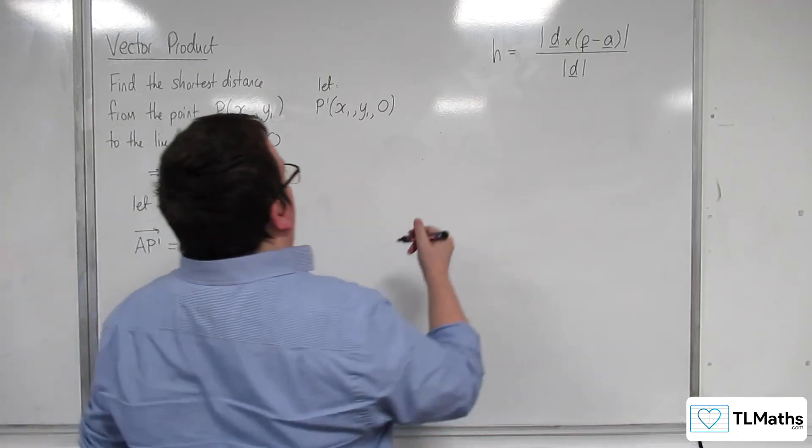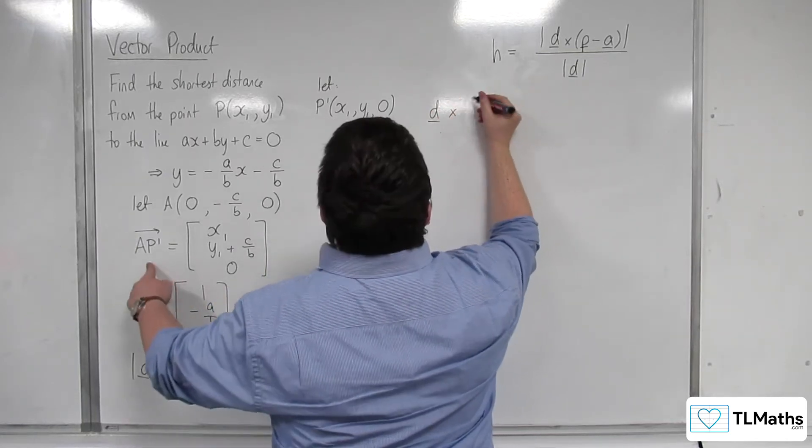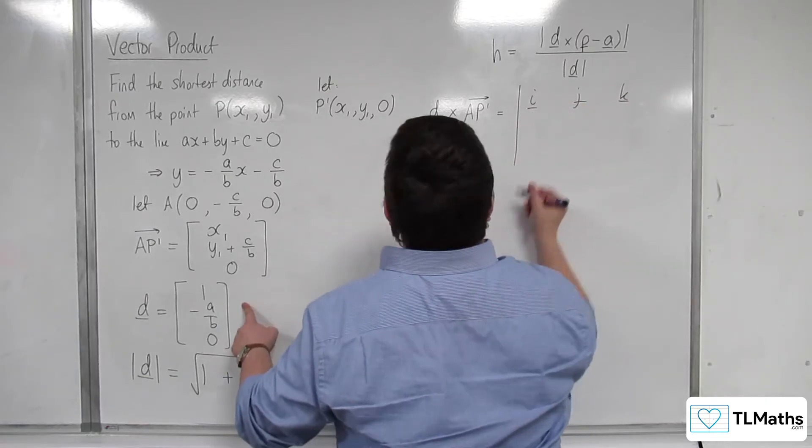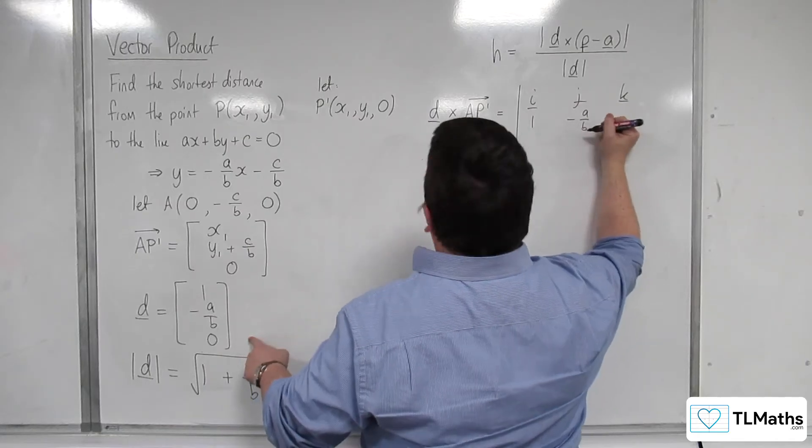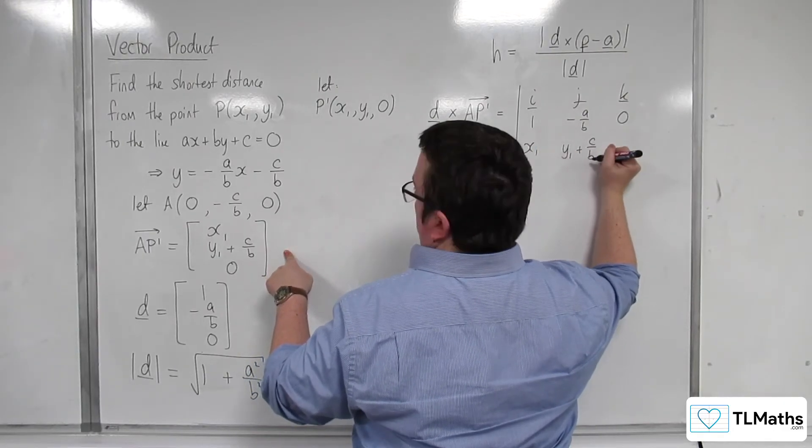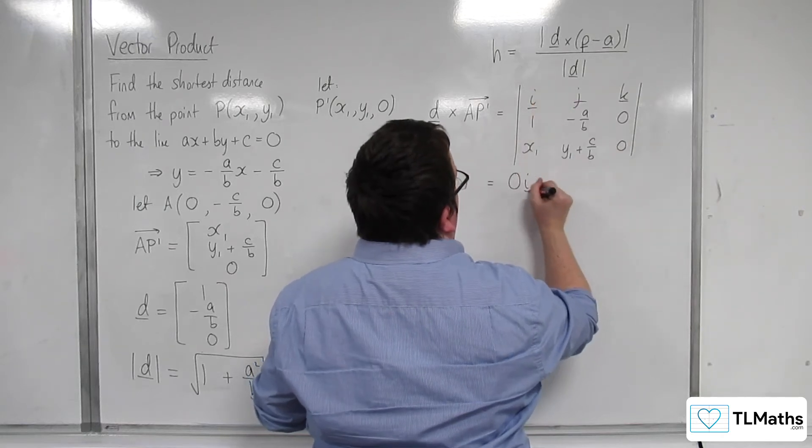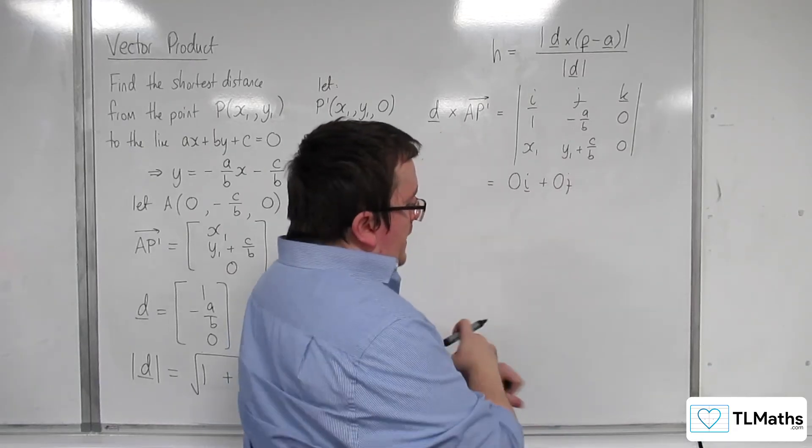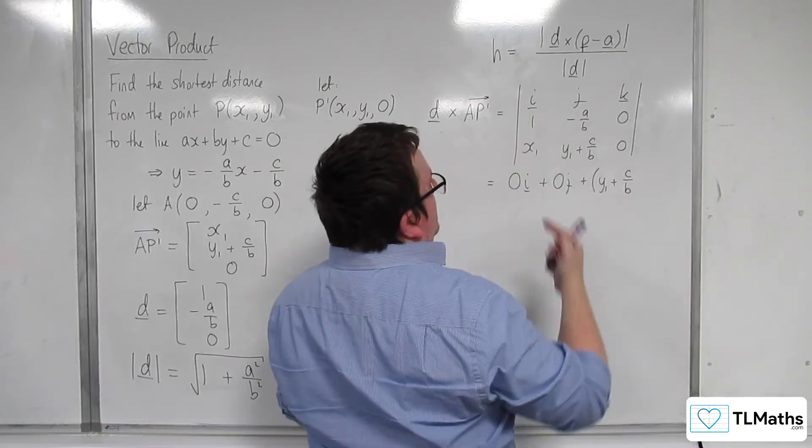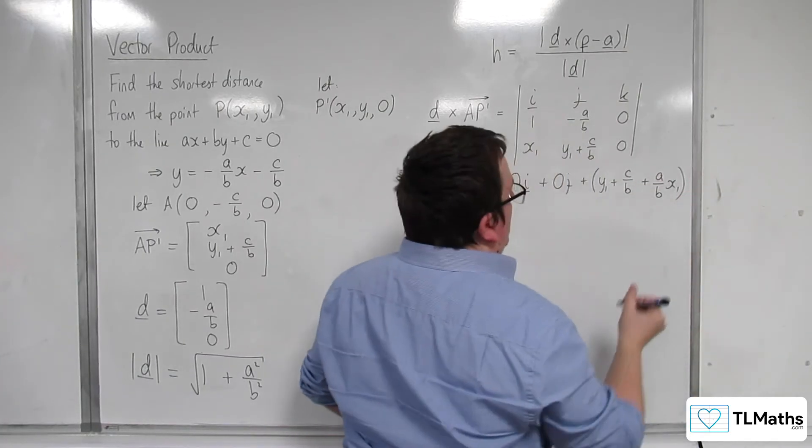Right. We're well on our way. So, the next thing is, I need to work out this numerator. So, d crossed with p take away a is our AP' prime. So, i, j, k. And d is 1 minus a over b, 0. And AP' prime was x1, y1 plus c over b, 0. So, we're going to get 0i, 0j. And then, for k, we've got 1 times y1 plus c over b, take away minus a over b times x1. So, plus a over b x1. And that's with a k on the end.